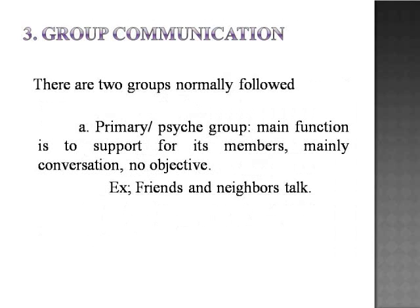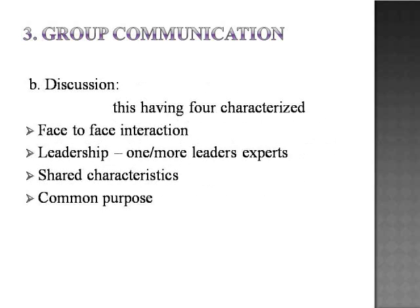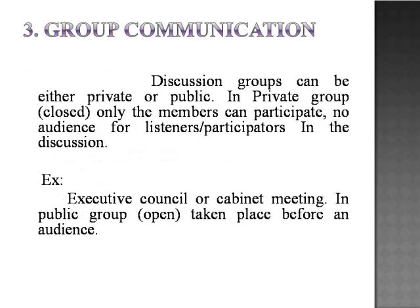There are two groups normally followed. Primary group: main function is to support its members, mainly through conversation, with no fixed objective. Example: friends and neighbor talk. Discussion groups have four characteristics: face-to-face interaction, leadership by one or more leaders, shared characteristics, and a common purpose. Discussion groups can be either private or public. In a private group, only the members can participate with no audience or listeners. Example: an executive council or cabinet meeting. In a public group, discussion takes place before an audience.